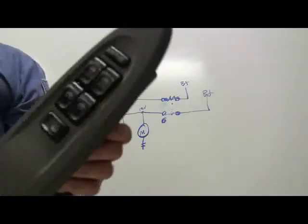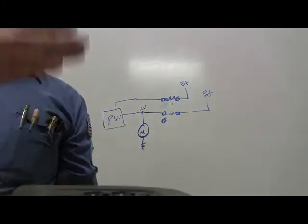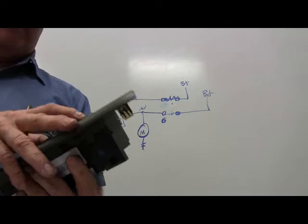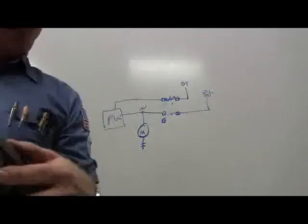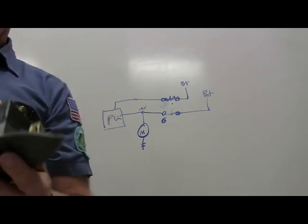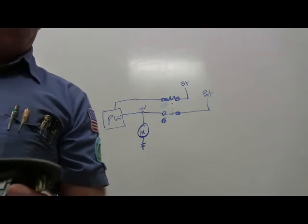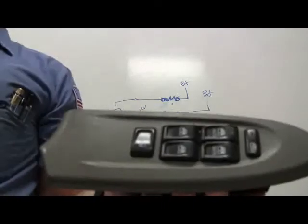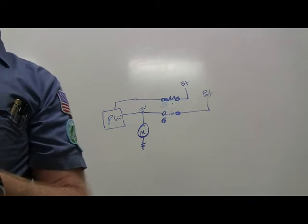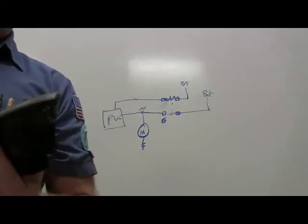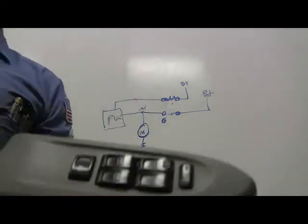A lady came in with a Trailblazer — her window was making a lot of clicking noise and doing all kinds of things. We checked it and had power and ground going to it, so we ordered a new power window switch assembly. We plugged the new one in and it wouldn't work at all — nothing. The box said it needed to be programmed before it would work. This is not just a set of power window switches — this is a computer.